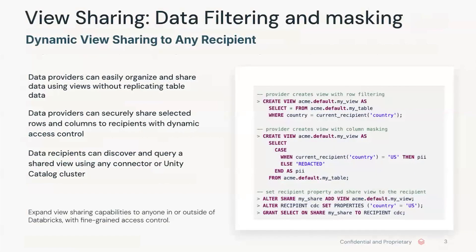Let's dive a little deeper. View sharing allows data providers to organize and share data using views, eliminating the need to replicate entire tables. This not only saves on storage, but also simplifies data governance. It provides a way to share only the data that each recipient is entitled to see. Data providers can securely share selected rows and columns to recipients with dynamic access control, achieved through a powerful combination of views and the current recipient function.